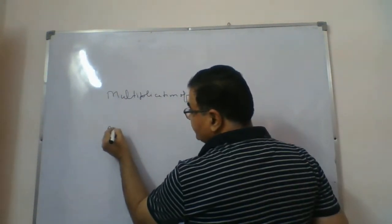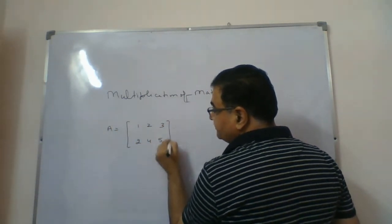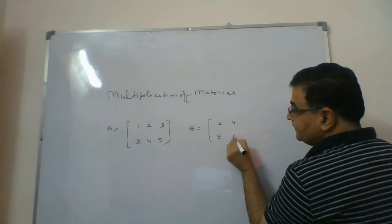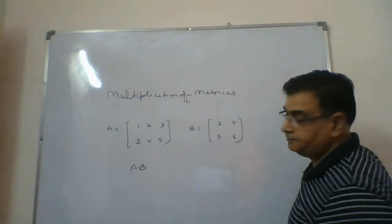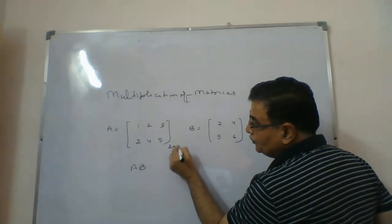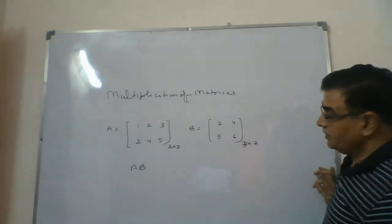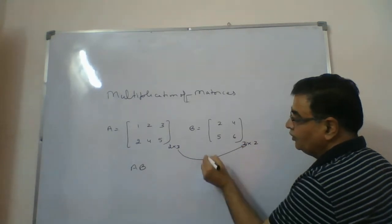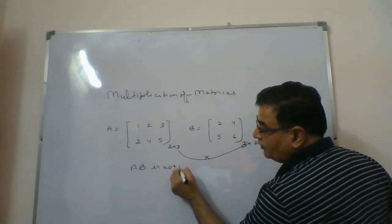Let me take an example. Matrix A is [1, 2, 3; 2, 4, 5] — a 2×3 matrix. Matrix B is [2, 4; 5, 6] — a 2×2 matrix. My question is: can AB be possible? A is the pre-multiplier (order 2×3) and B is the post-multiplier (order 2×2). The columns of A is 3, but the rows of B is 2 — they are not equal. So AB is not possible.